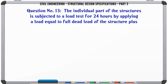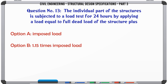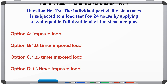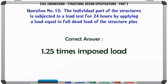The individual part of the structure is subjected to a load test for 24 hours by applying a load equal to full dead load of the structure plus: a. Imposed load, b. 1.15 × imposed load, c. 1.25 × imposed load, d. 1.3 × imposed load. The correct answer is: 1.25 × imposed load.